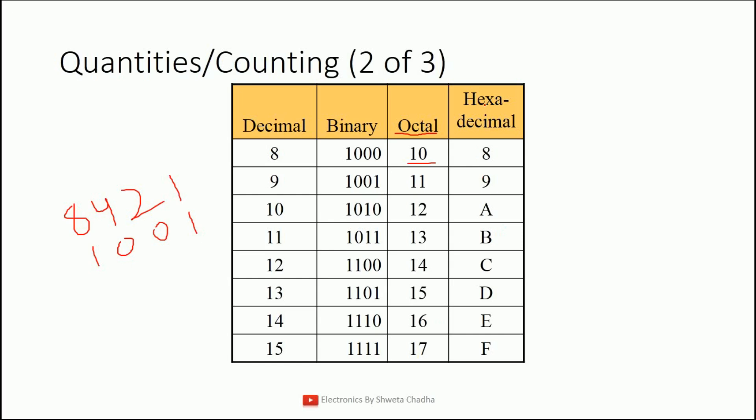Last is the hexadecimal number system. In general, after 9 we write 10. But in hexadecimal, before writing 10, we must include all the symbols which are possible. So after 9, we write A, B, C, D, E, F. As you can see, till F we have written, and after F we will write 10.